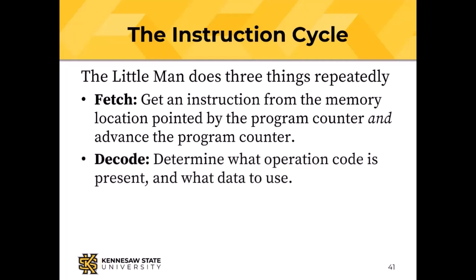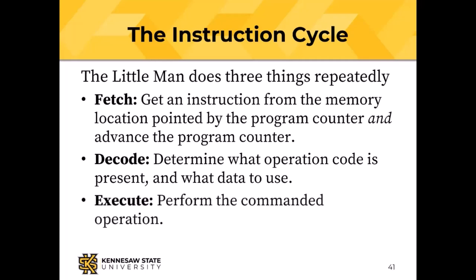The little man looks at the operation code and uses that table to determine what operation, and looks at the two-digit operand to determine what data. Then execute: do what the operation code says. Around and around — fetch, decode, and execute.